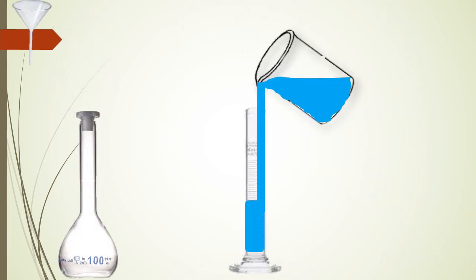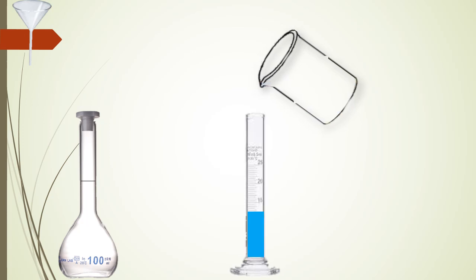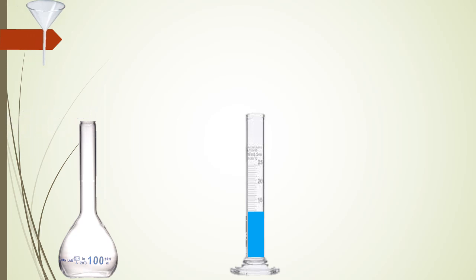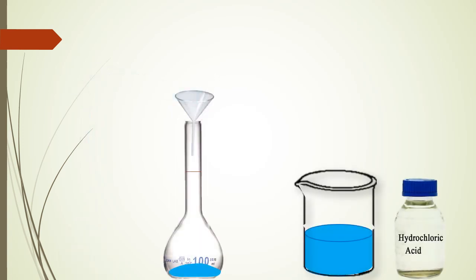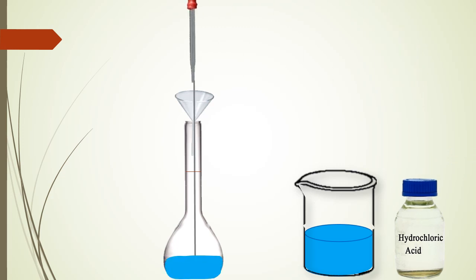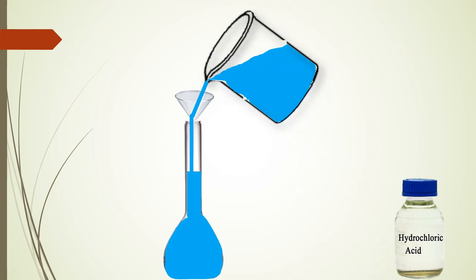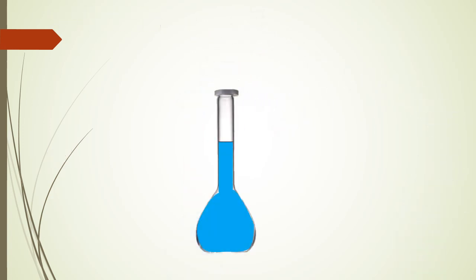Pour some distilled water from the beaker into the measuring cylinder. Open the flask and add a little water into the measuring flask before addition of hydrochloric acid to avoid any harm. Take 8.26 ml of concentrated hydrochloric acid using a pipette and add the acid into the measuring flask. Always remember: if you add water to acid, the water boils and the acid may splatter or splash. But if you add acid to water, the water is unlikely to splash out. Now add water into the measuring flask up to the mark. Store the solution for further use. This is the 100 ml of 1 molar solution of hydrochloric acid.